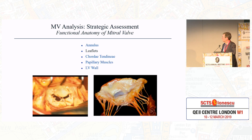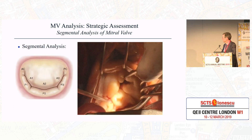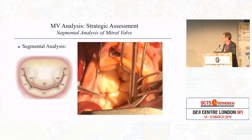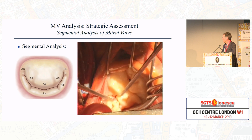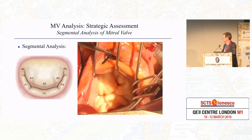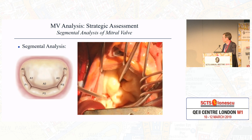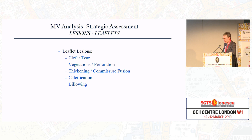Looking at the leaflets, we need to do a segmental analysis, going from segment to segment starting with a reference point, usually P1, then working around the rest of the segments to see which are prolapsing and what needs to be addressed. Leaflet lesions can include a cleft or tear, vegetations or perforations, thickening or commissural fusion, calcification and billowing — with billowing not to be confused with prolapse.